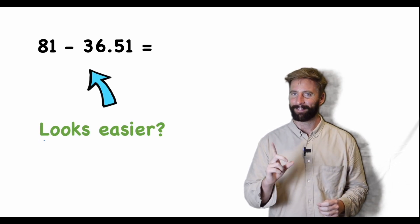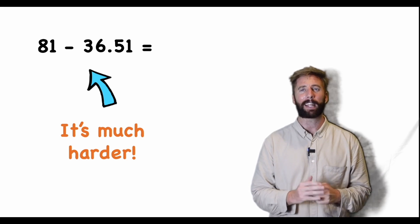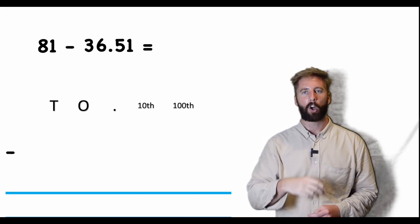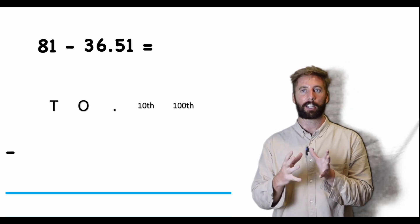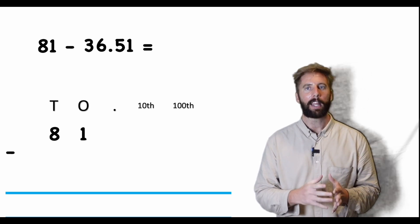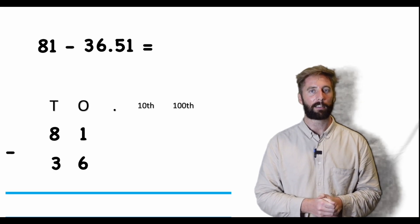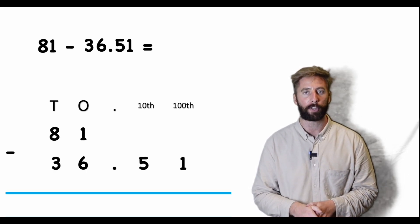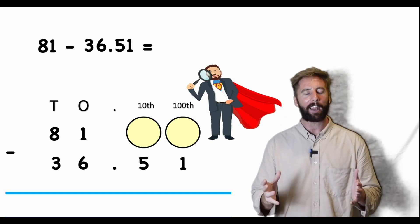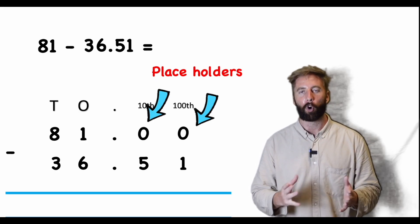Small numbers — easier? I don't think so. I think this is actually going to be even harder. I can see I need ones, tens, tenths, and hundredths because of the 36.51. I put 81 on top: one in ones, eight in tens. Then 36.51: six ones, three tens, five tenths, one hundredth. What do we notice? We have two gaps on the top row. Can I just leave them? No — I'll get totally different answers. I need to put in placeholders.